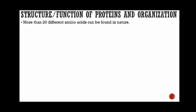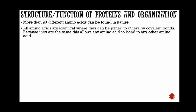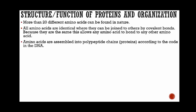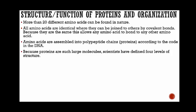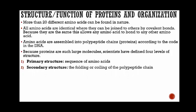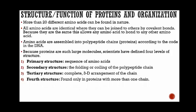There are more than 20 different amino acids — the monomers that make up proteins — and more than 20 different amino acids can be found in nature. All amino acids are identical where they can be joined to others by covalent bonds, which allows any amino acid to bond to any other amino acid. Amino acids are assembled in polypeptide chains — which are proteins — according to the code in the DNA.